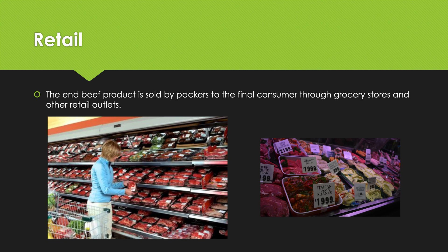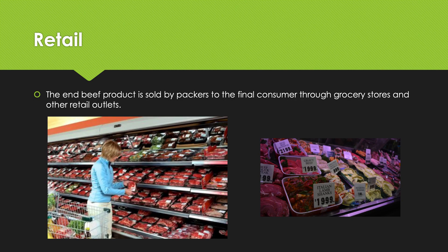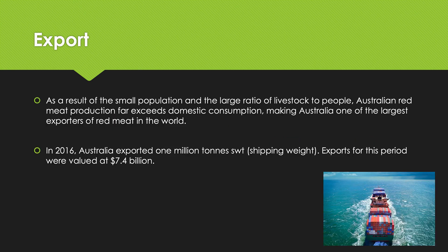After it's been approved and got the appropriate labels on it, the end beef product is sold by packers to the final consumer through grocery stores and other retail outlets. Once it's been through processing and confirmed safe to eat, it goes to whatever market it was intended for — and another market could be the export market. The domestic market is like Coles and Woolworths, staying in the country.